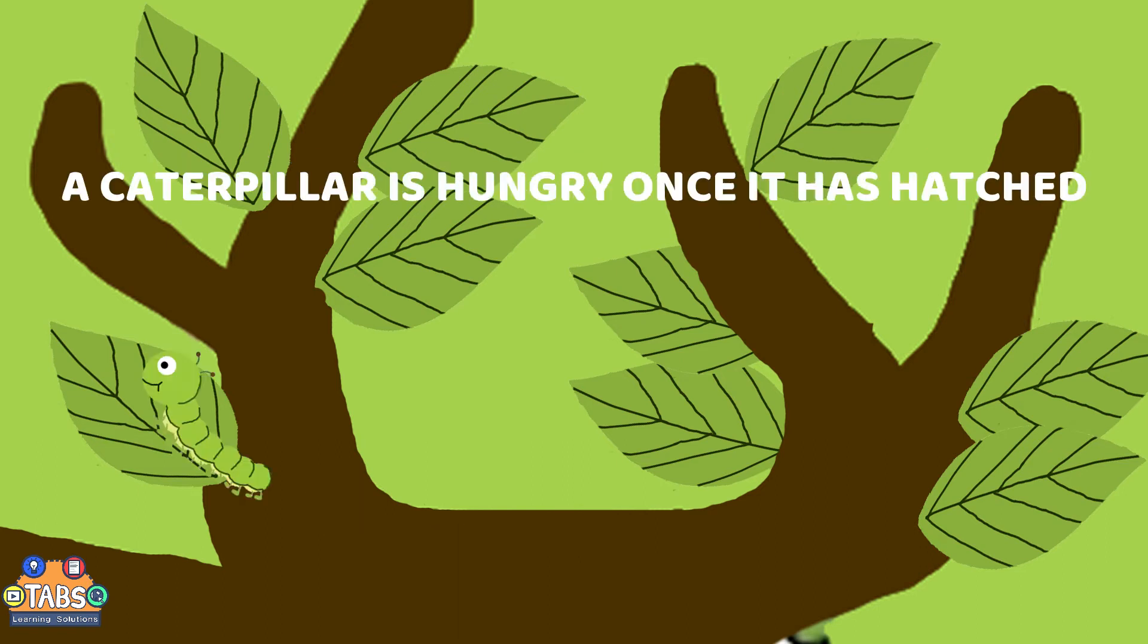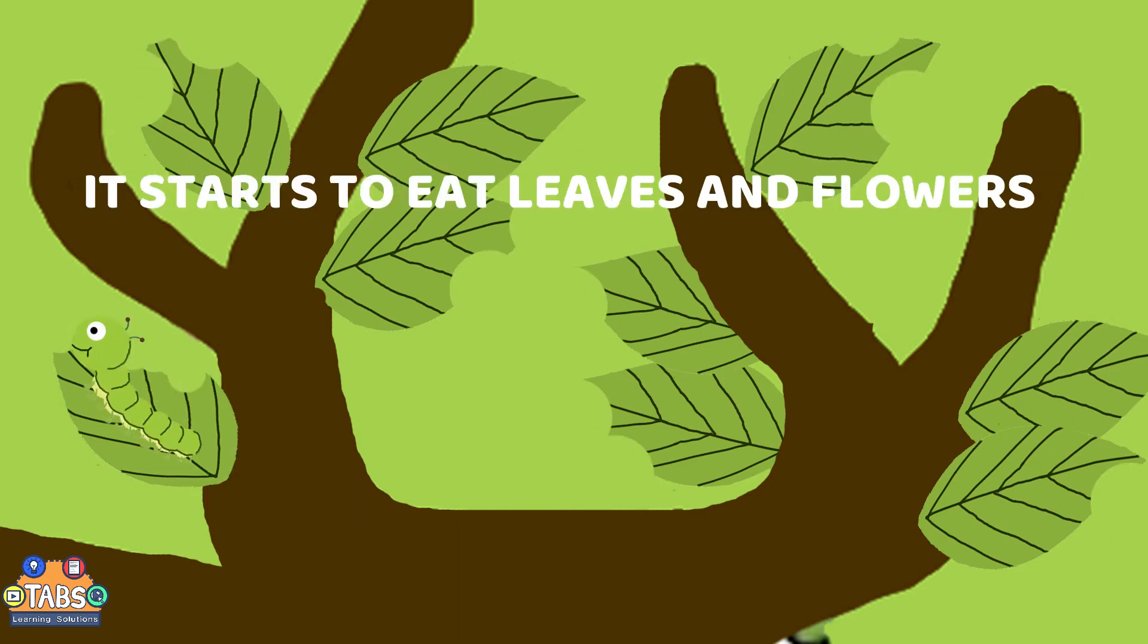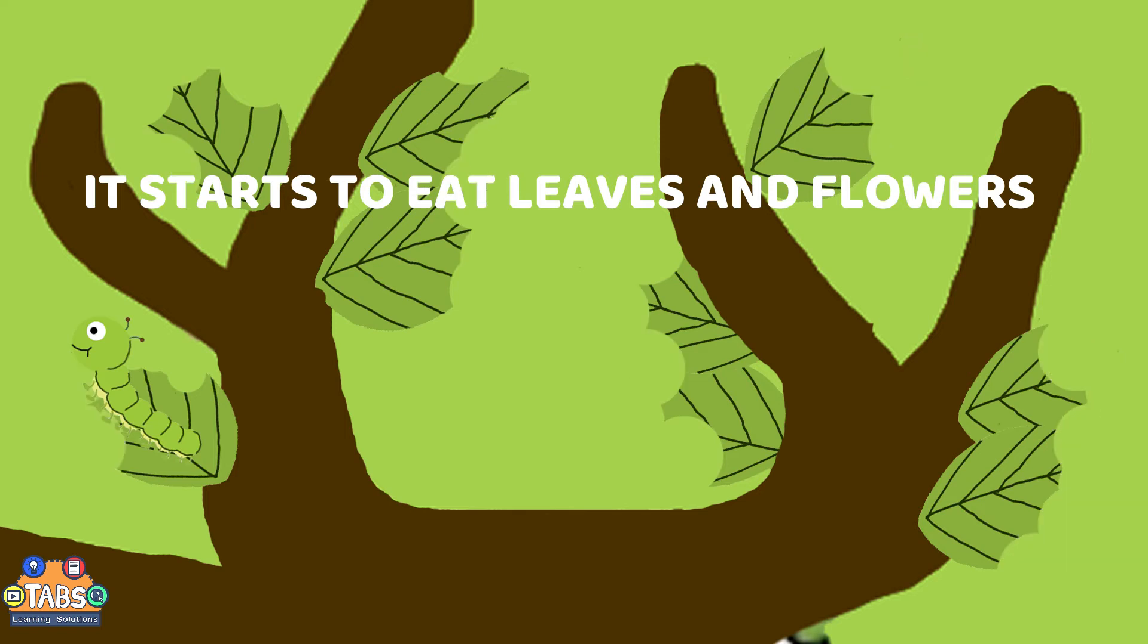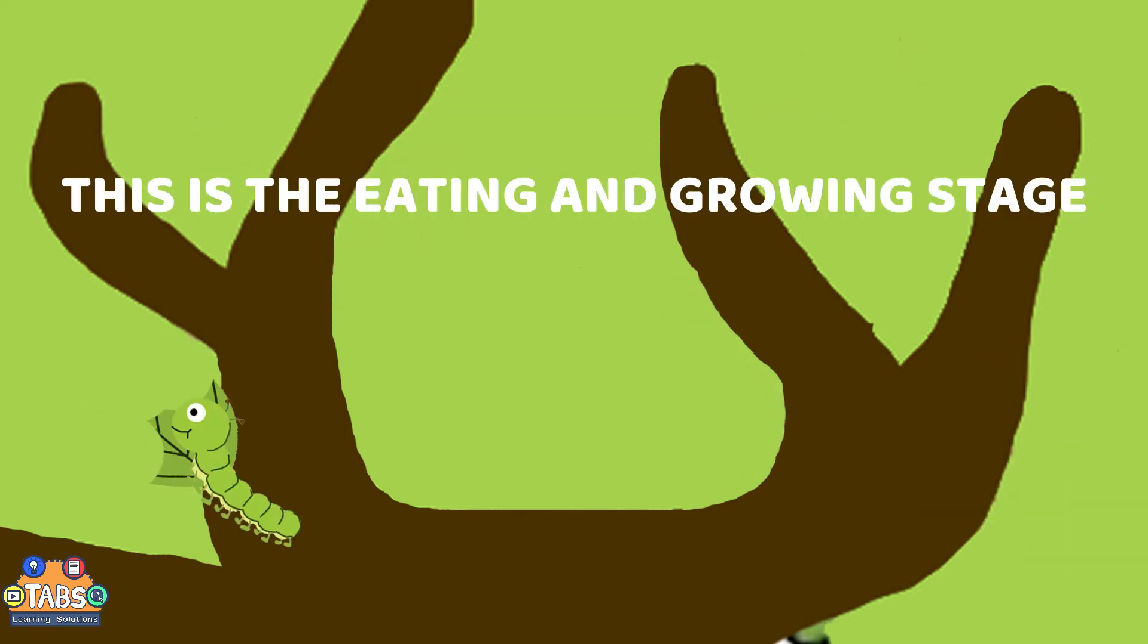Caterpillar is hungry once it has hatched. It starts to eat leaves and flowers. This is the eating and growing stage.